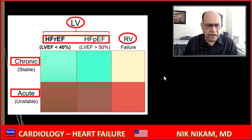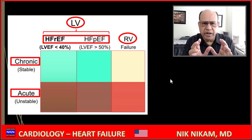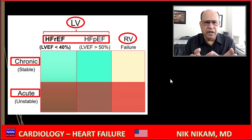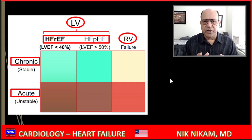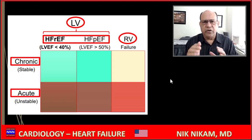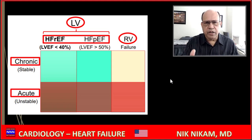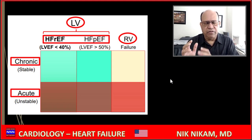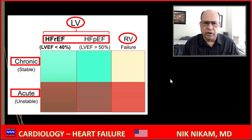Whenever a patient is admitted to the hospital, understand they are not just coming for chronic heart failure management. Nobody gets admitted to the hospital for chronic stable heart failure. You have to say acute-on-chronic heart failure. The question is: what created this acute decompensation? That is where you as a doctor come in to diagnose the cause.